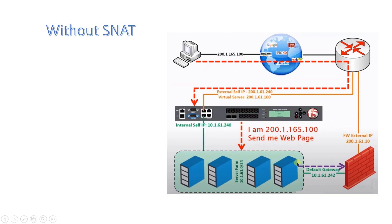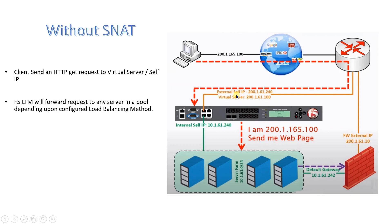Now let's understand why SNAT is required and what issue you will face when SNAT is not configured. Assume that a client with IP address 200.1.165.100 sends an HTTP GET request to your virtual server or self-IP. F5 LTM will forward this request to one of the servers in the pool depending on the configured load balancing method. Note that the request arriving at the server has a source IP address of 200.1.165.100.